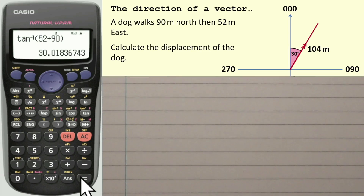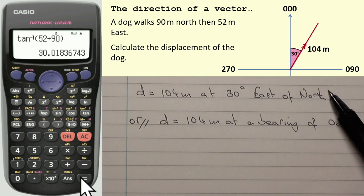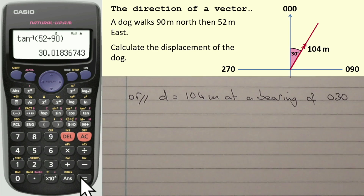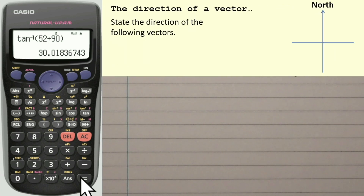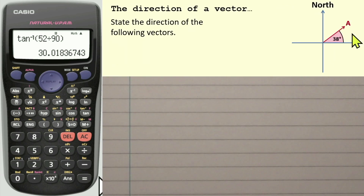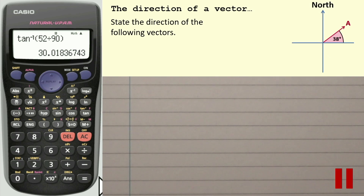I'm going to show you another five vectors. I'd like you to write down — in both forms — what the direction of each vector is. Pause when I show you the example, then play again to see if you're right. Here is the first one. You can see this is 38 degrees measured from east, going towards the north from east. If you're expressing this as a bearing, remember that east is 090. Pause now, then play when you have the answer.